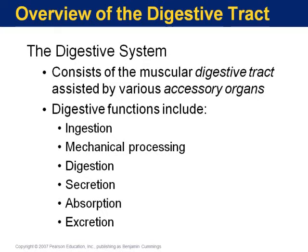The six functions are ingestion, mechanical processing, digestion, secretion, absorption, and excretion. It would also be wise to know all the organs and the order in which food or the digestive products travel, as well as the functions of those organs and the accessory organs.